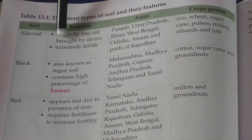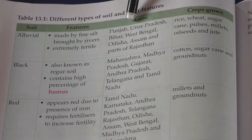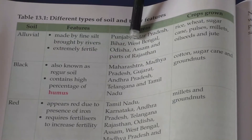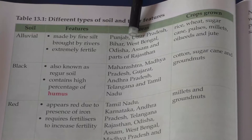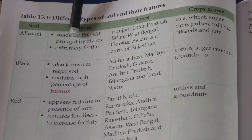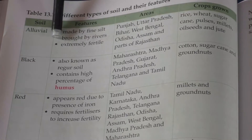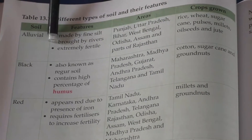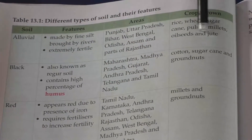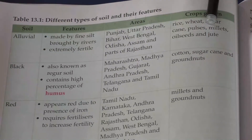First, let's see about alluvial soil. We can find alluvial soil in the states of Punjab, Uttar Pradesh, Bihar, West Bengal, Odisha, Assam, and some parts of Rajasthan. This soil is made of fine silt brought down by rivers originating from the northern mountains, so it is extremely fertile. The crops grown in alluvial soil are rice, wheat, sugarcane, millets, oil seeds, etc.